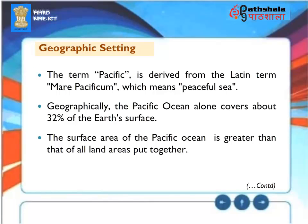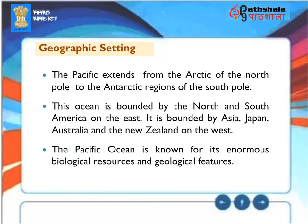Geographic Setting: The term Pacific is derived from the Latin term Mare Pacificum, which means Peaceful Sea. Geographically, the Pacific Ocean alone covers about 32% of the Earth's surface. Its surface area is greater than that of all land areas put together. The Pacific Ocean extends from the Arctic at the North Pole to the Antarctic regions of the South Pole. It is bounded by North and South America on the east, and by Asia, Japan, Australia, and New Zealand on the west. The Pacific Ocean is known for its enormous biological resources and geological features.